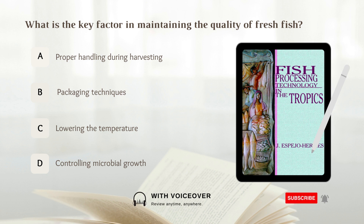What is the key factor in maintaining the quality of fresh fish? A. Proper handling during harvesting. B. Packaging techniques. C. Lowering the temperature. D. Controlling microbial growth. Answer: C. Lowering the temperature.